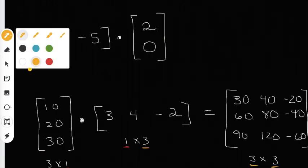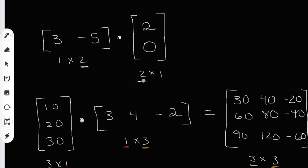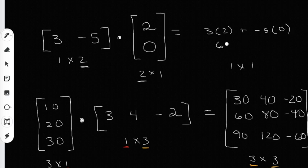Now I have one more problem to do. We're going to be multiplying a row by a column. This is a 1 by 2 because it has 1 row and 2 columns, and this is a 2 by 1 because it has 2 rows but 1 column. The inside numbers match up, so my answer is going to be a 1 by 1. When I multiply these matrices I'm going to have 3 times 2 plus negative 5 times 0. 3 times 2 gives me 6, negative 5 times 0 gives me 0, and 6 plus 0 gives me 6 — that will be my 1 by 1 matrix.